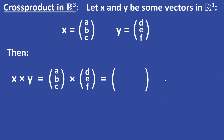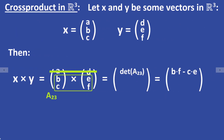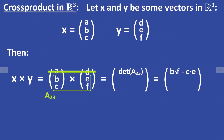For the first entry of the cross product vector, you cross out the first row. The first entry is equal to the determinant of this 2×2 submatrix, which means it is equal to B times F minus C times E.